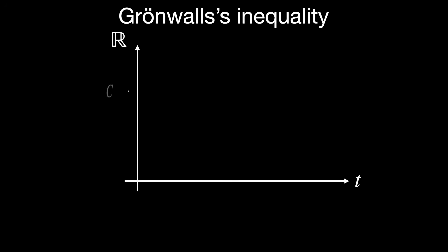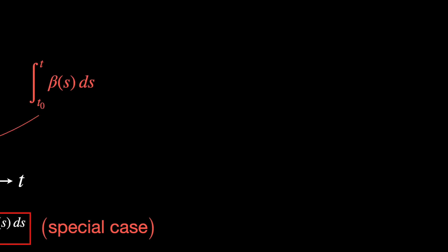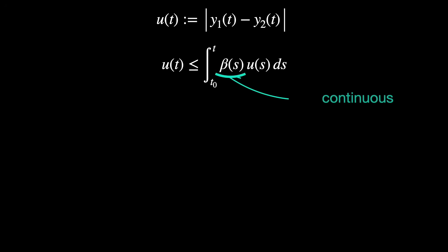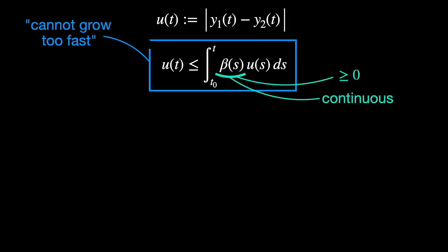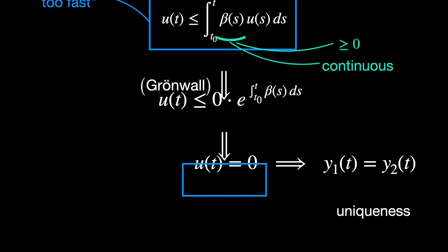Beyond existence, we need to control and understand the growth or shape of solutions. For example, Grönwall's inequality helps us to establish bounds on how solutions evolve, especially in stability theory. This is typically used when you have a bound on a function, say the difference between two solutions, and want to show that it cannot grow too fast, or even that it must vanish, which implies that the solution is unique.